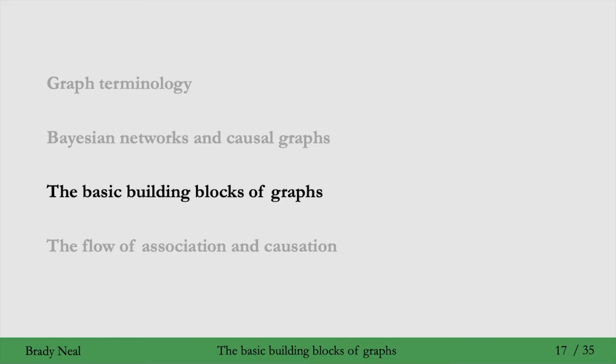So this whole section will be about how association flows in graphs, and it will apply not just to causal graphical models but also regular probabilistic graphical models, so models that are just statistical. Causal graphical models inherits a lot of the work that was done in these regular probabilistic graphical models.